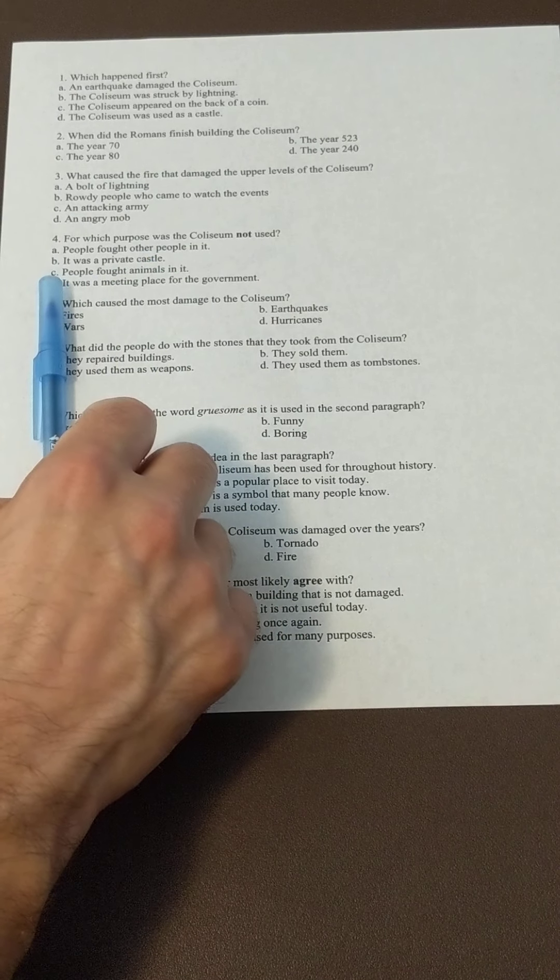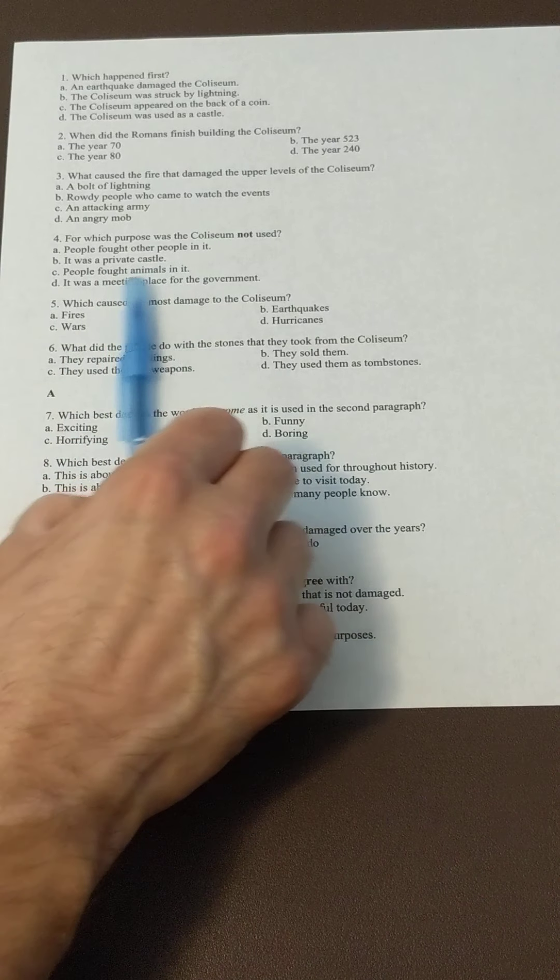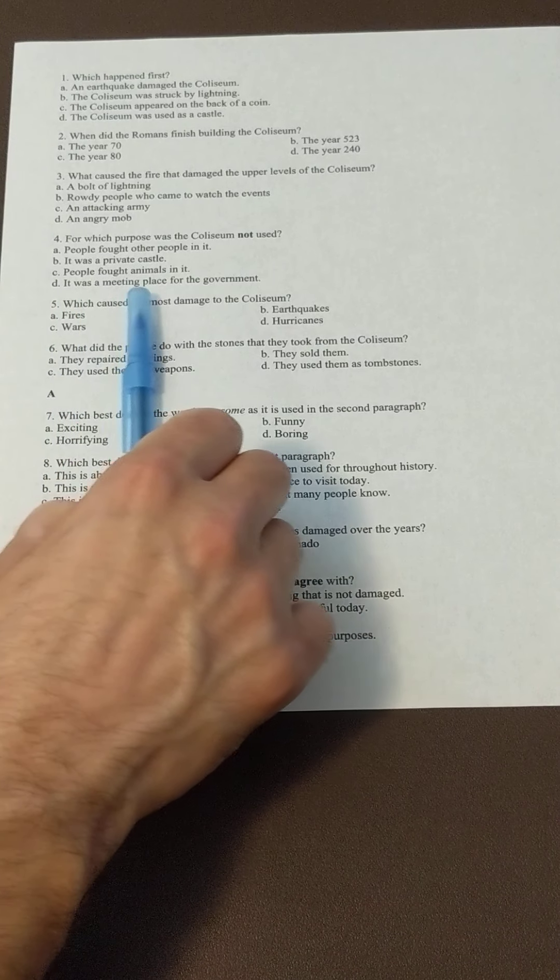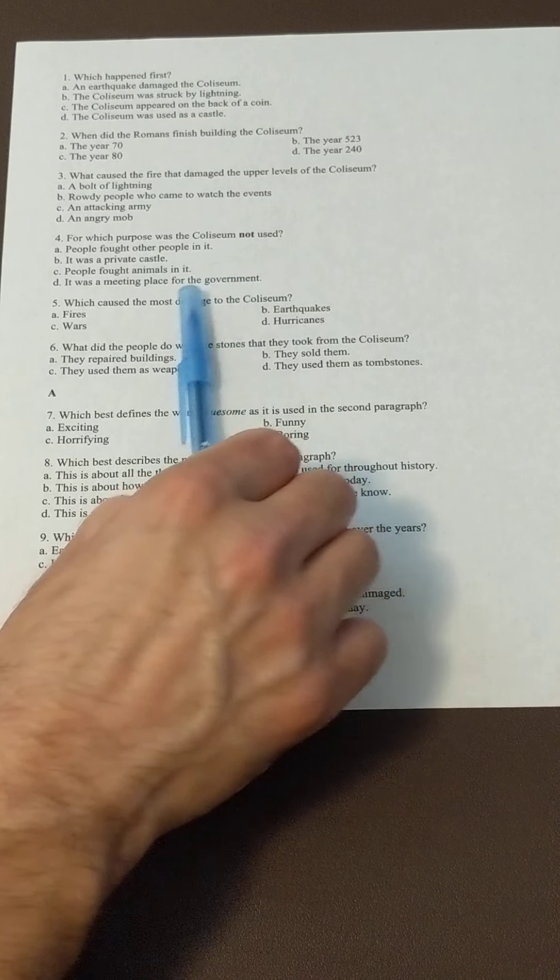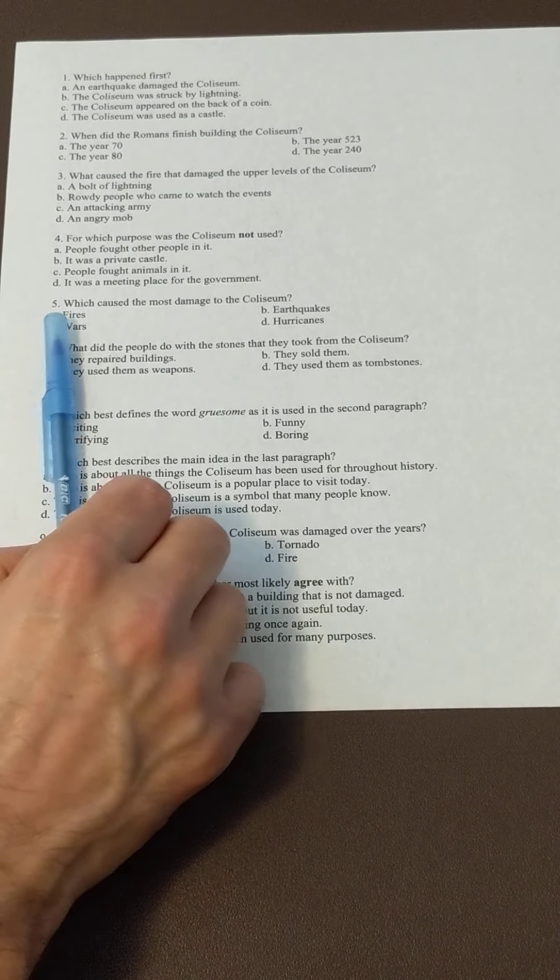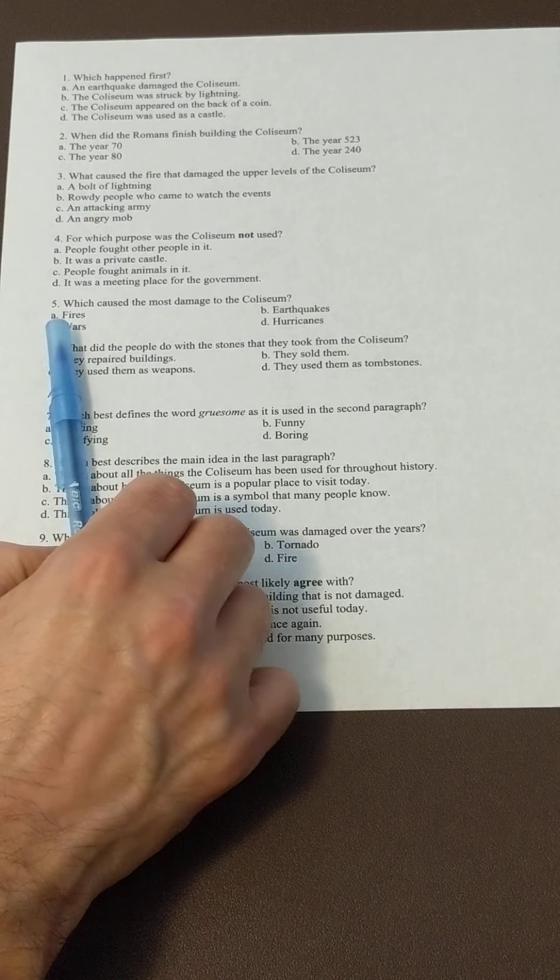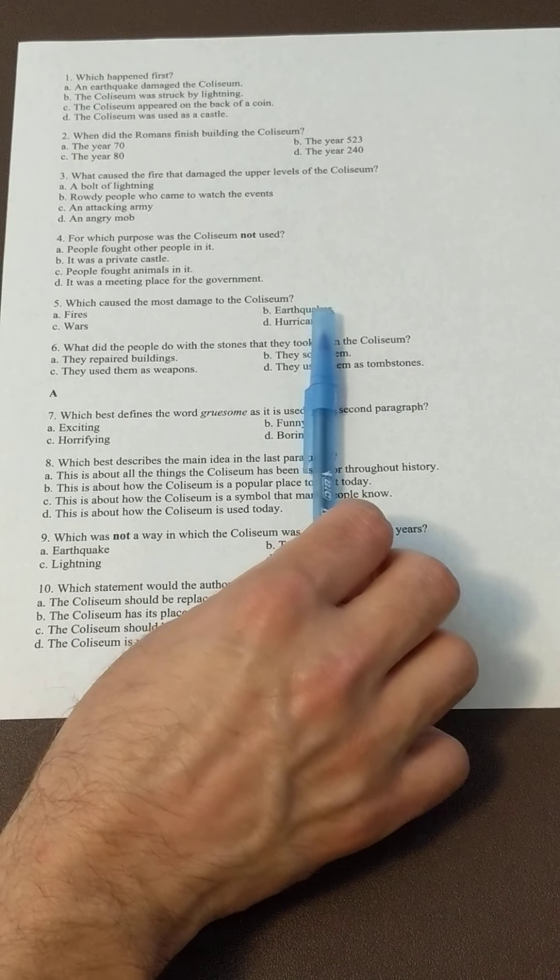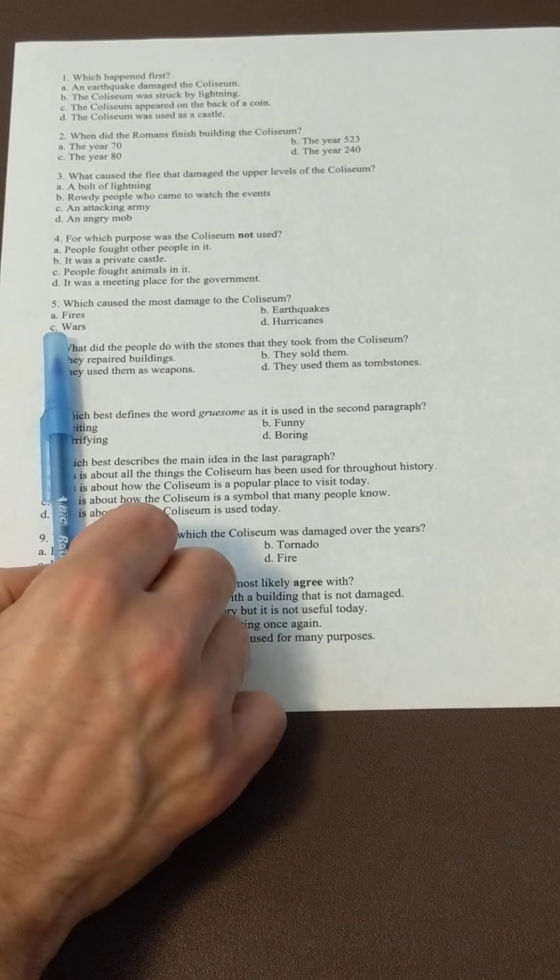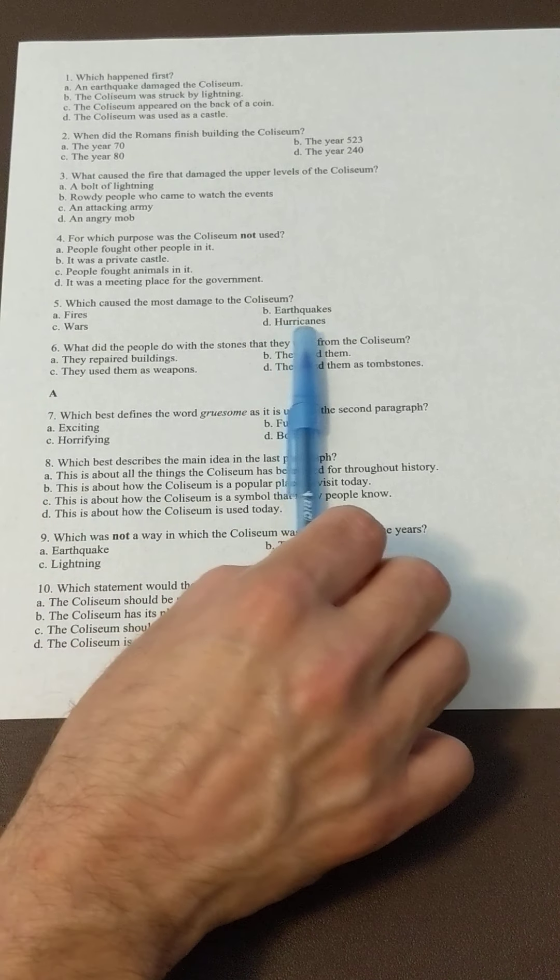castle; C, people fought animals in it; or D, it was a meeting place for the government. Five: what caused most of the damage to the Colosseum? A, fires; B, earthquakes; C, wars; or D, hurricanes.